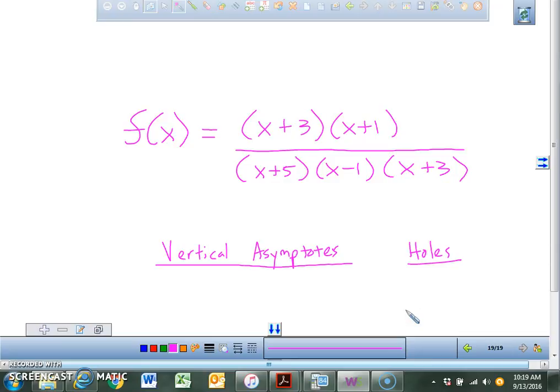What did you guys find for the vertical asymptotes? Negative 5. So you said x equals negative 5. Anything else? X equals negative 3.